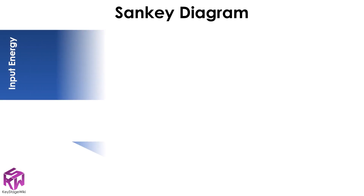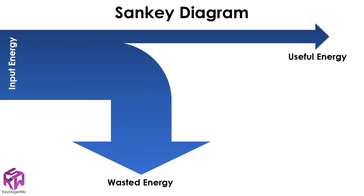Scientists use a Sankey diagram to show just how much energy may be lost when it is transferred from one store to another. Here we can see that we start with a large amount of energy but the majority is wasted, and only a small amount is useful. The amount of energy is shown by the thickness of the line at each stage — the line starts out thick but then splits into two thinner lines, with the useful energy shown as a thinner line than the wasted energy.